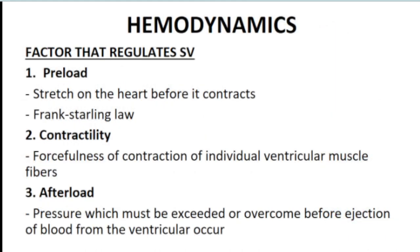The factors that regulate stroke volume are: preload — per the Frank-Starling Law, the more blood inside, the greater the stretch and the greater the contractility; contractility — the forcefulness of the ventricular muscles; and afterload — the pressure needed to open the semilunar valves, or the resistance that must be overcome before ejection of blood can occur.